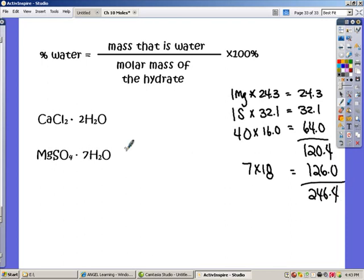Now for my percentage, I can just take the amount that's water, that's what goes on the top, 126.0, and divide that by the amount of it that is the entire hydrate, 246.4. Times 100 to slide that decimal, and we get for an answer 48.8 percent.